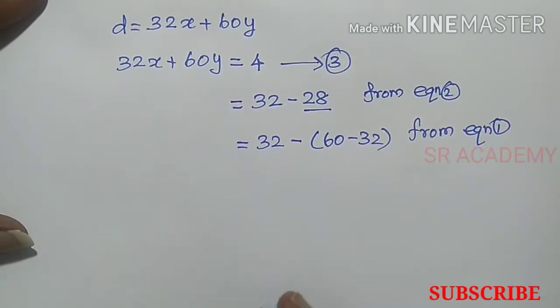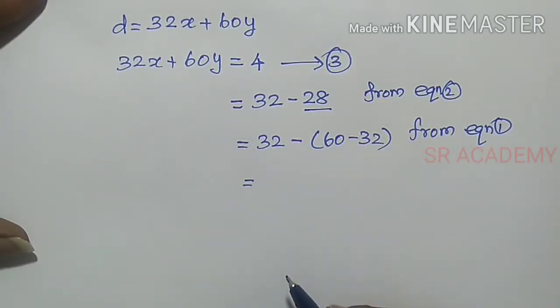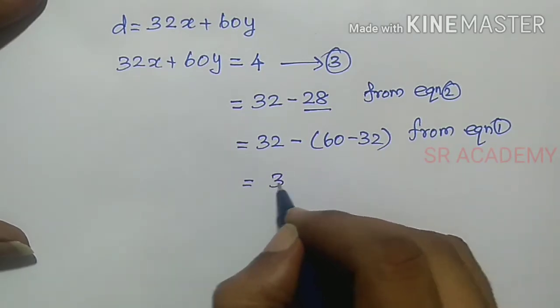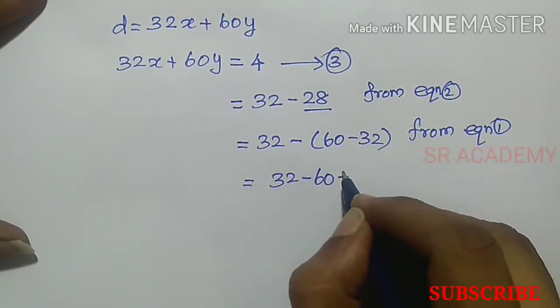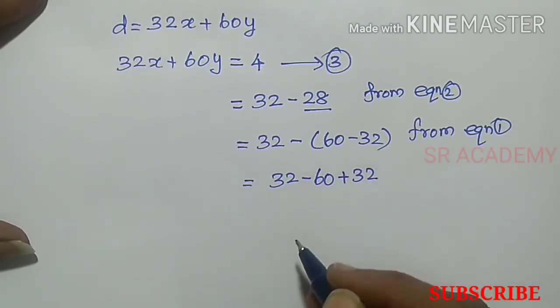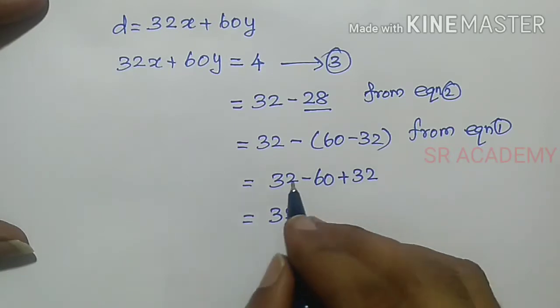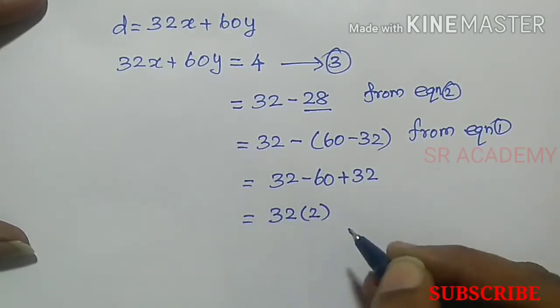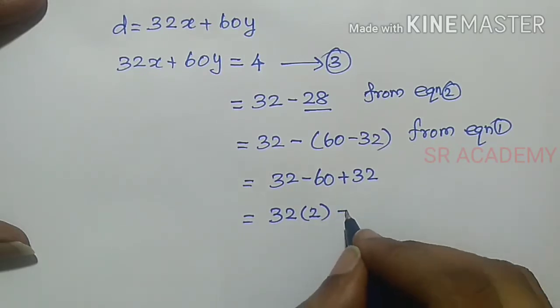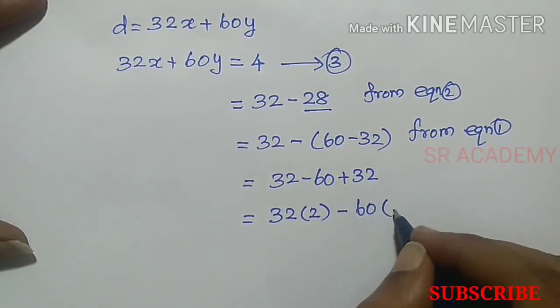Substituting: 4 equals 32 minus (60 minus 32). This becomes 32 minus 60 plus 32, which equals 32 times 2 minus 60 times 1.